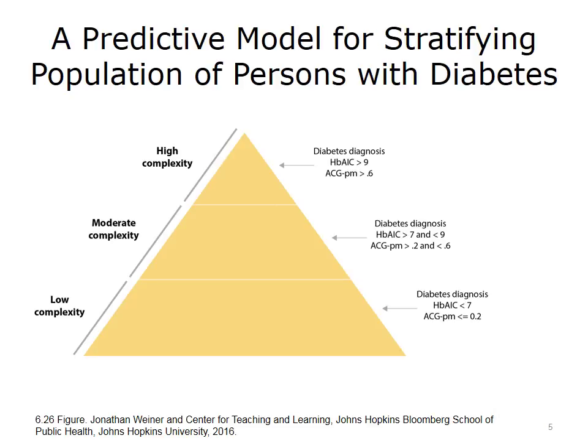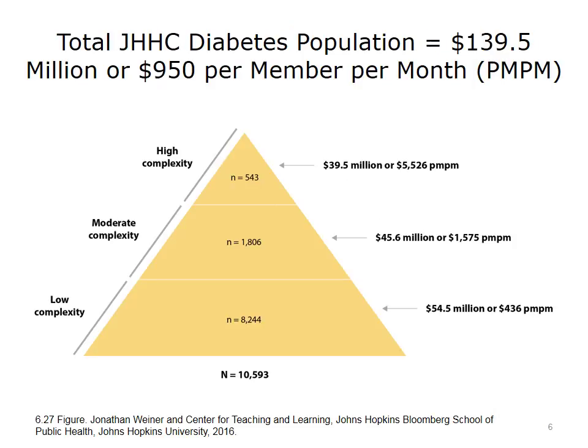JHHC uses the patient's hemoglobin A1C, derived from the EHR or lab data system. The clinicians among you understand that that's a very important marker for blood sugar level over a period of time. Based on this segmentation, the Johns Hopkins Population Management Nursing Team is able to select those persons in greatest need of outreach or other interventions. As shown from the previous Medicare analysis, the local situation is quite similar for the denominator population — those patients who are capitated with the Johns Hopkins MCO.